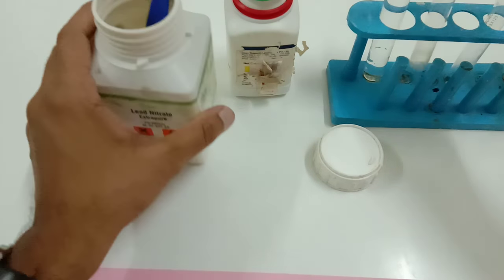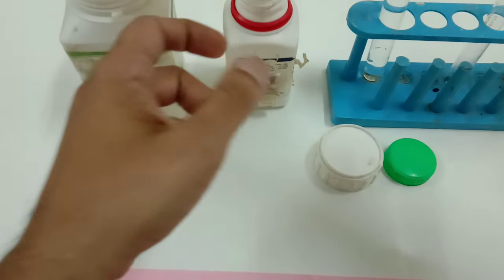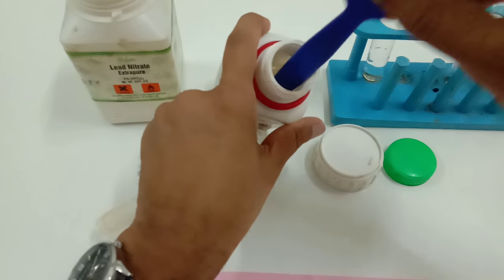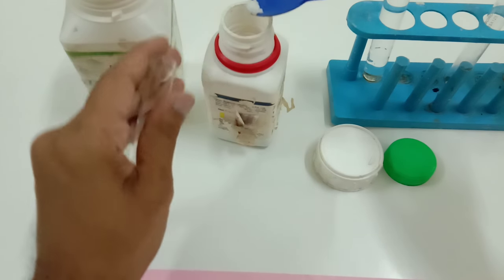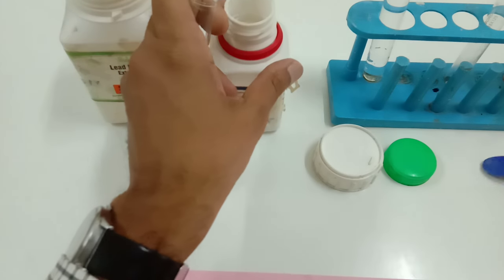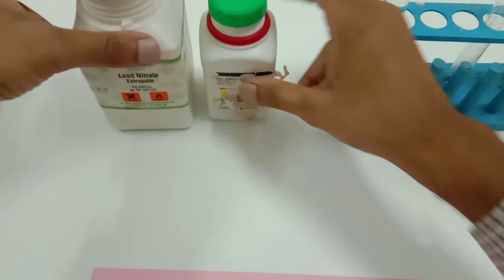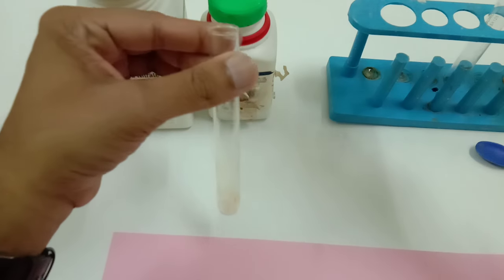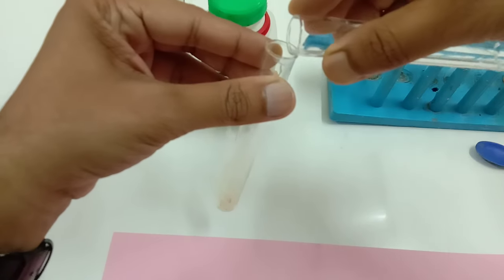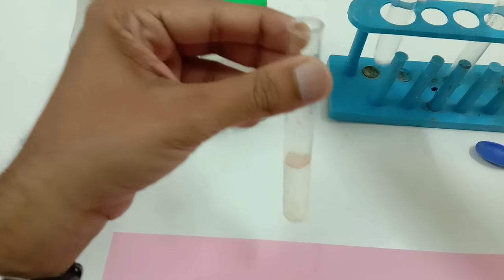Then in another test tube, I am going to add potassium iodide, that is again a white color salt. Now in this potassium iodide, I am going to add water so that this becomes the aqueous solution of potassium iodide.